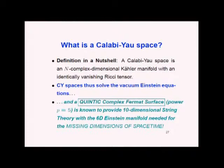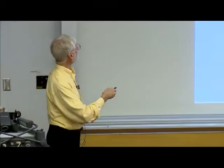It turns out that the fifth power — the quintic complex Fermat surface, p equals five — will provide the ten-dimensional string theory with the six-dimensional Einstein manifold needed for the missing dimensions of space-time.